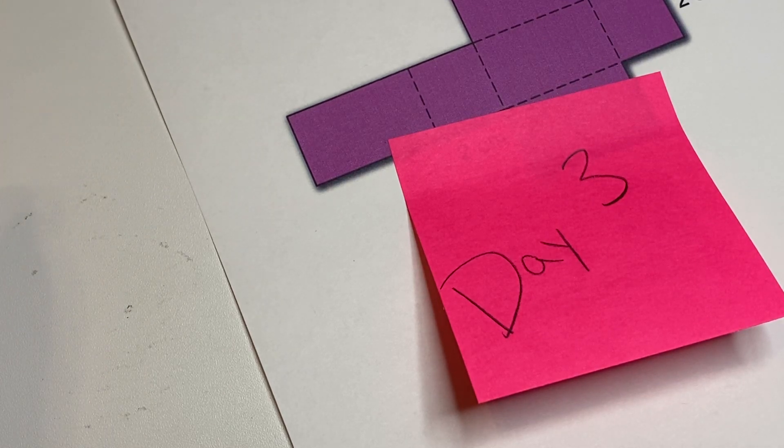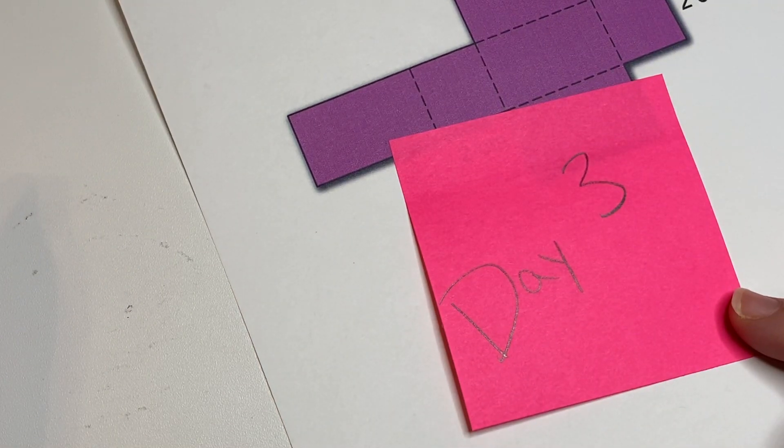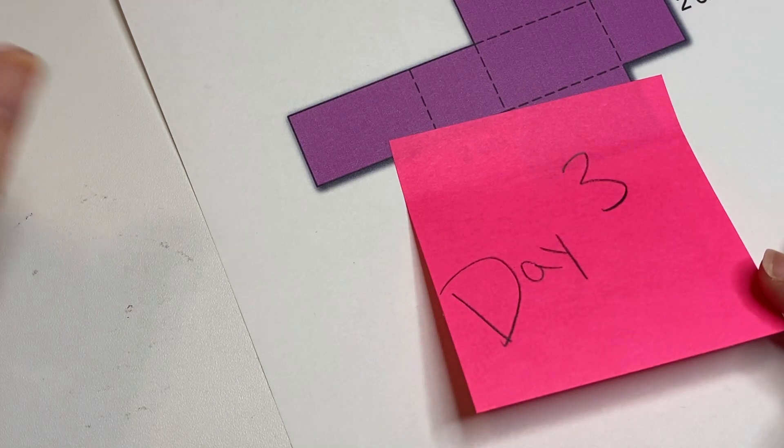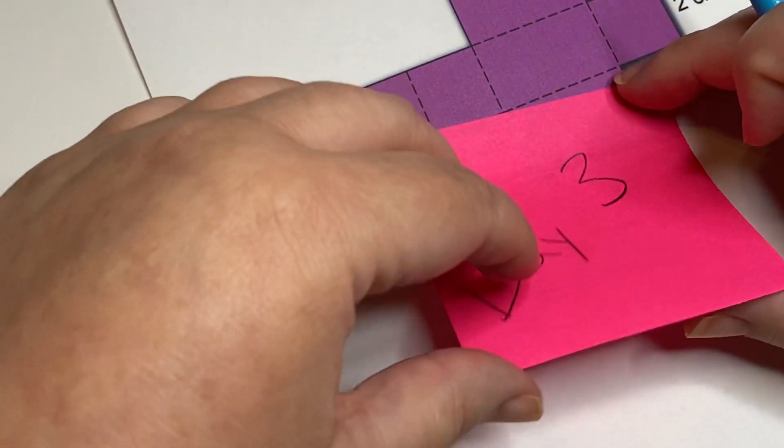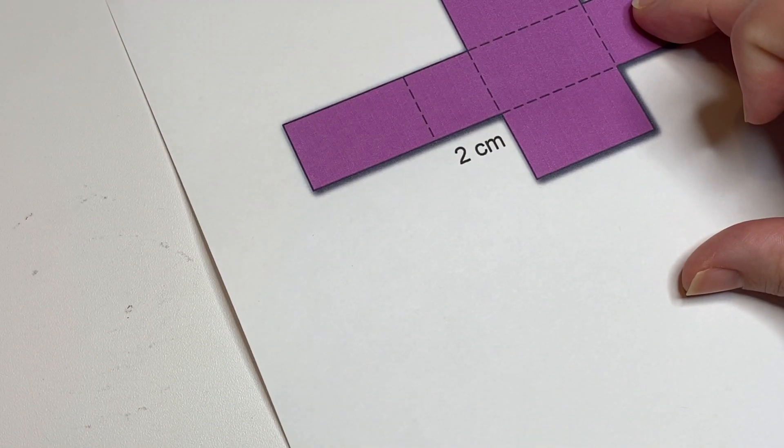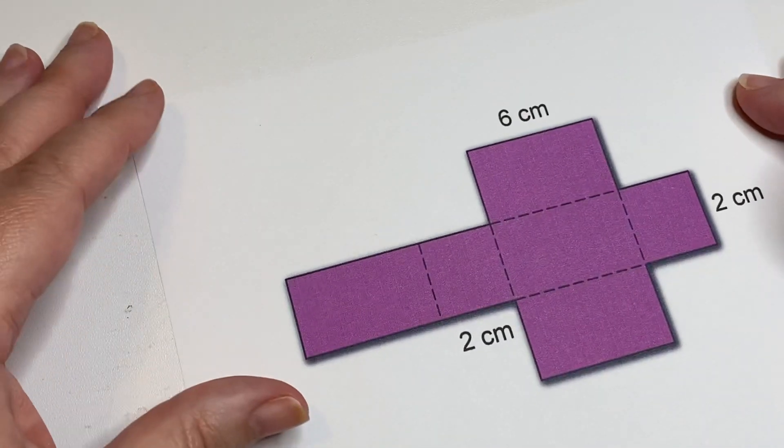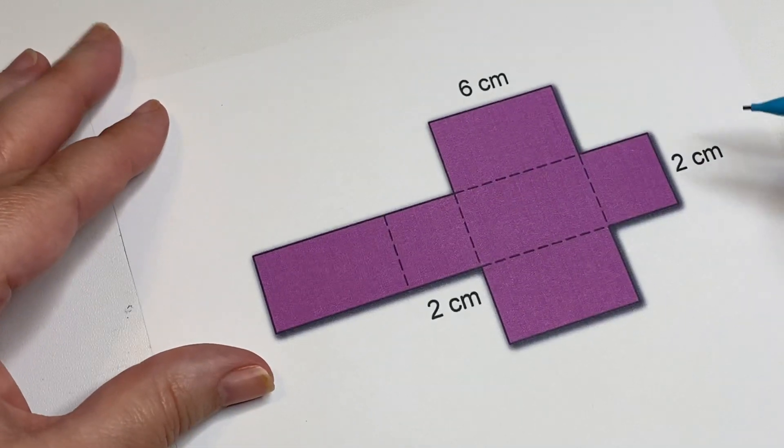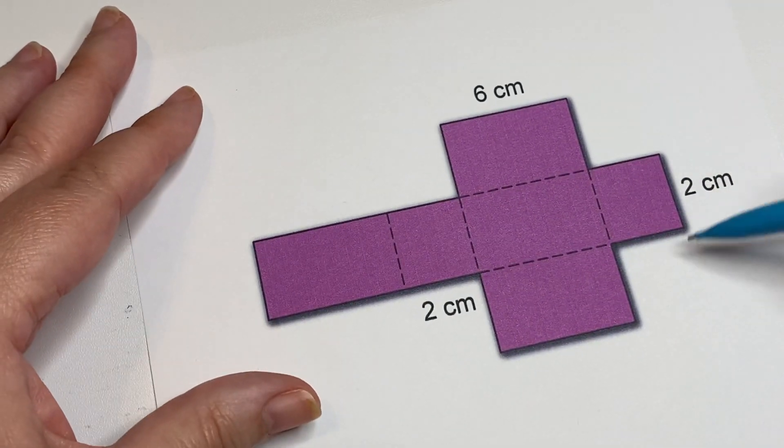Hi, welcome to day three of finding the surface area of rectangular prisms. Today we're actually going to get into non-cubes, and these are rectangular prisms that don't have the same side lengths for all of the sides.